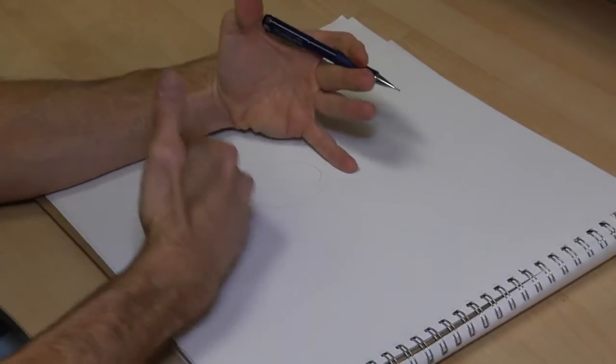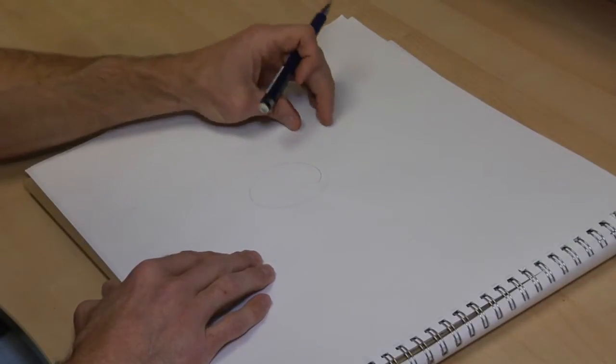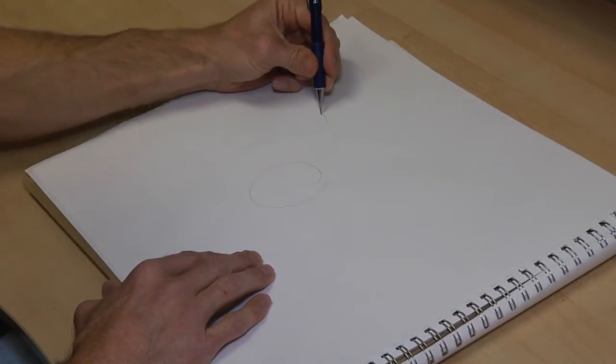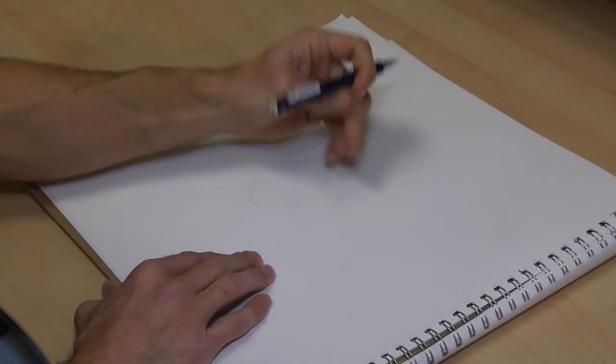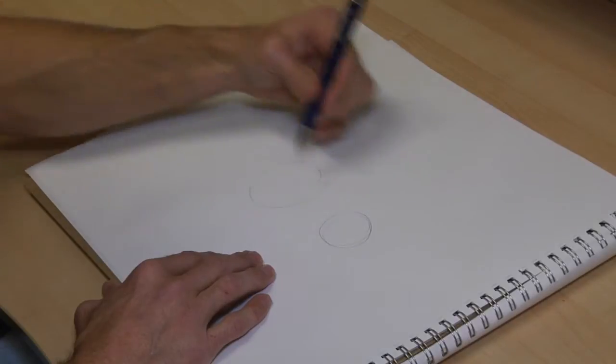Now a German Shepherd has a thick chest, so don't be shy about that circle. Come up where the head would be, draw another circle, and then come back onto the haunches or the rear of our dog. Draw a slightly smaller circle.